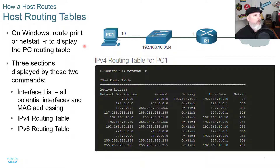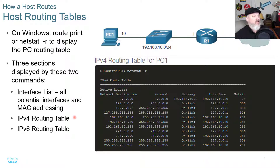Let's look at a host routing table on a Windows device. On Windows, the commands route print or netstat -r display the PC routing table. These two commands show three sections: the interface list with all potential interfaces and MAC addressing, the IPv4 routing table, and the IPv6 routing table. Here we can see an example — entering netstat -r gives us the routing table, showing our IPv4 entries with our gateway and interface.